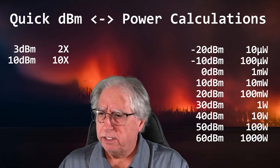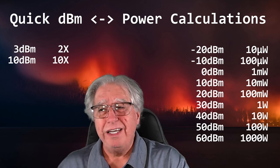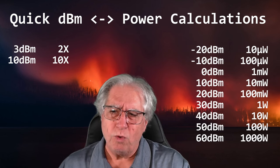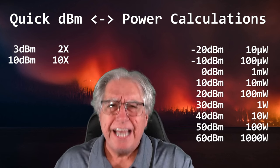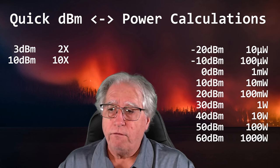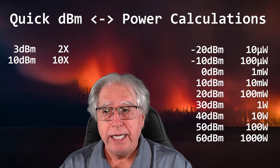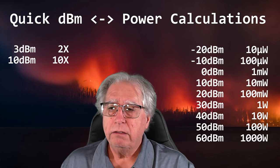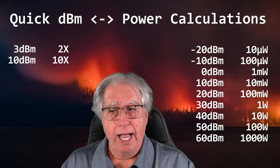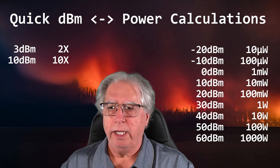10 dB means 10 times when increasing, and one-tenth when subtracting. If it's negative dB — for example, going from 50 dBm (100 watts) down to 40 dBm — you're taking away 10 dBm, so you divide by 10, not multiply. So 100 divided by 10 is 10 watts.